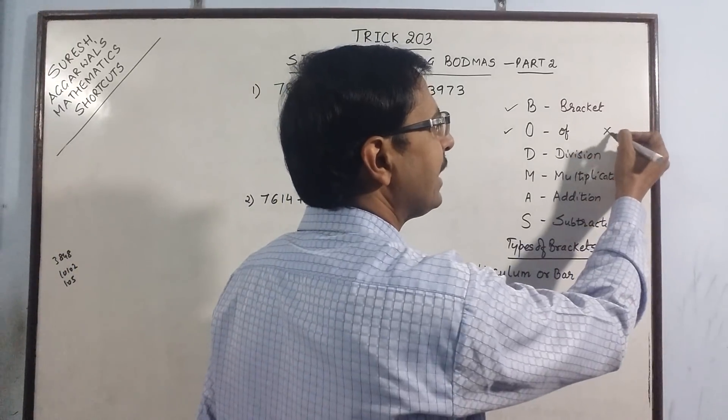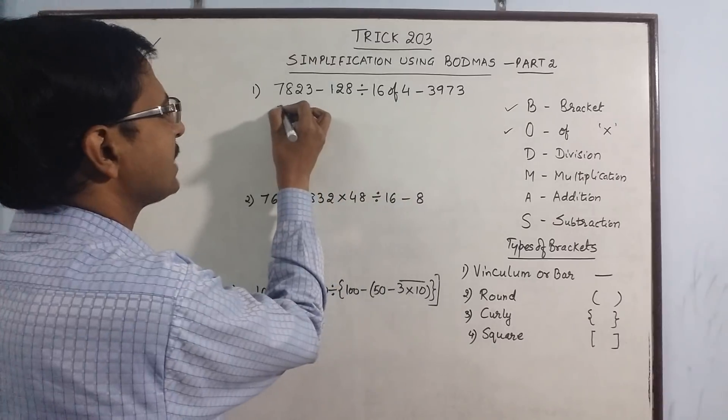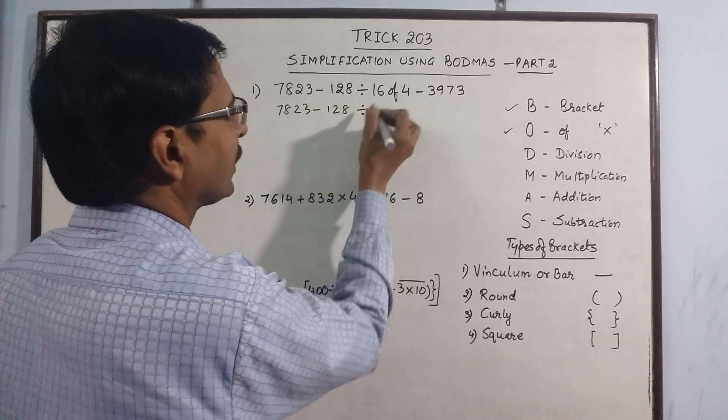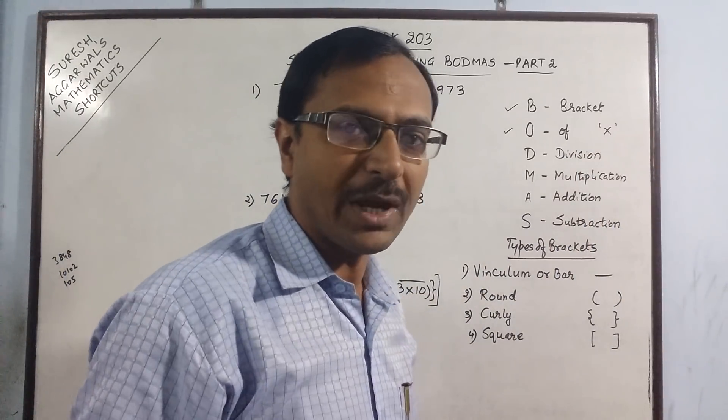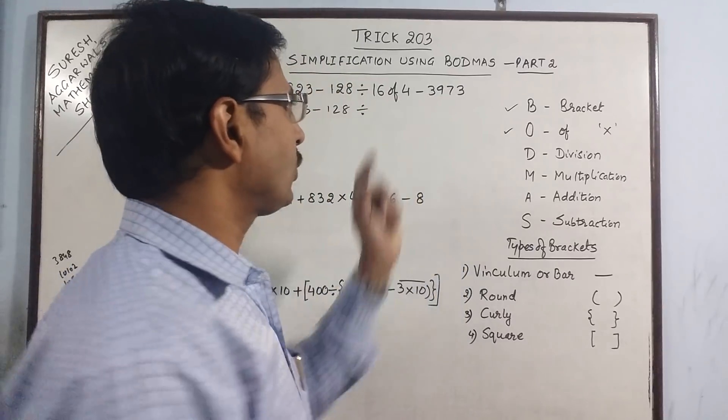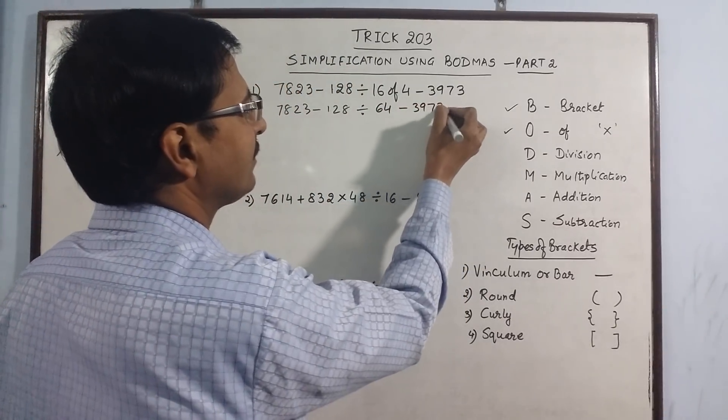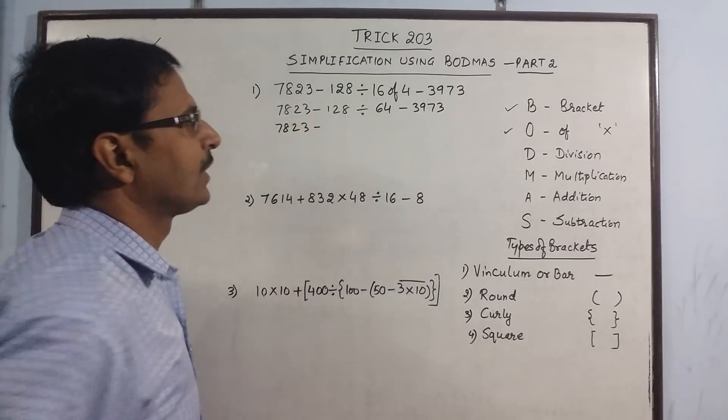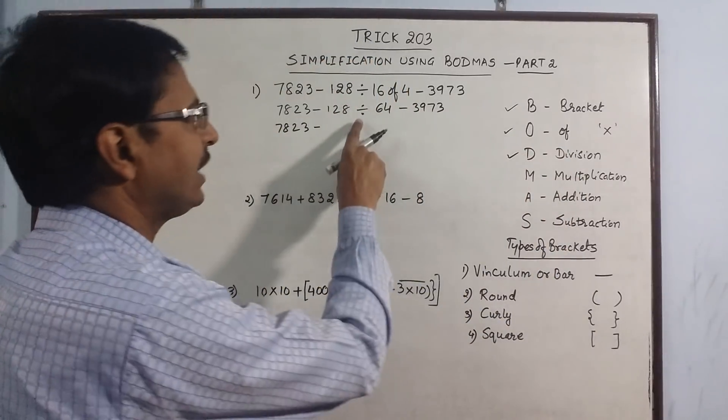This problem: 7823 minus 128 divided by, now 16 of 4 means 16 into 4, so we have to remove that 'of', so we have to multiply 16 and 4, that becomes 64, minus 3973.